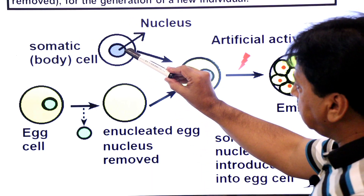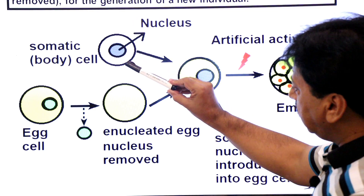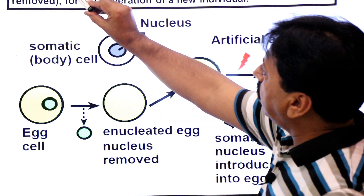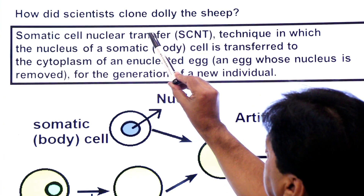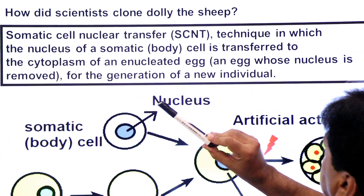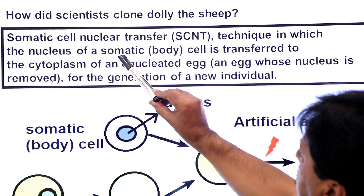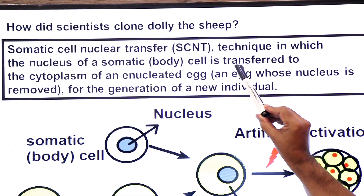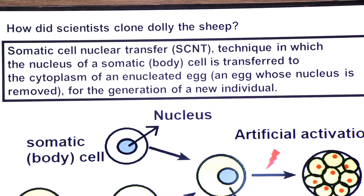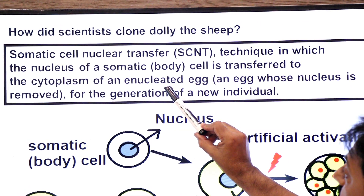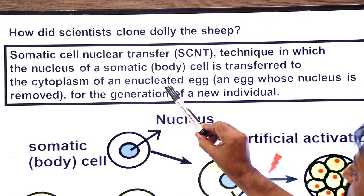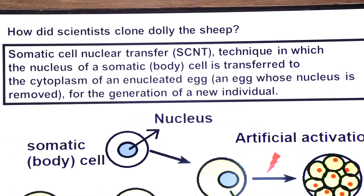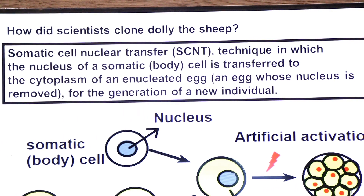When the somatic cell nucleus is transferred into an enucleated egg, this is called somatic cell nuclear transfer technique, in which the nucleus of a somatic cell or body cell is transferred to the cytoplasm of an enucleated egg — an egg whose nucleus has been removed — for the generation of a new individual.